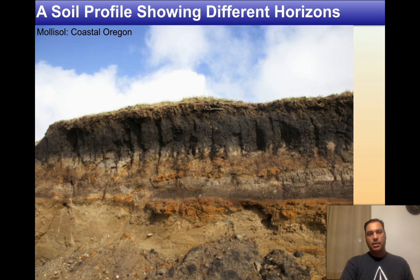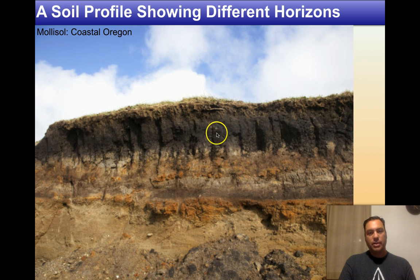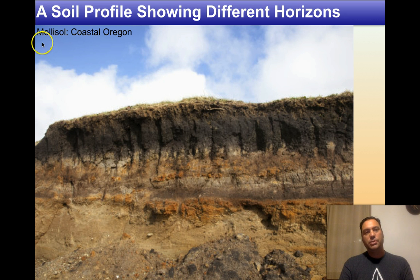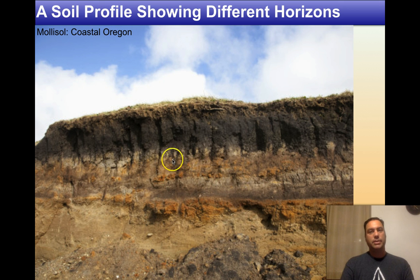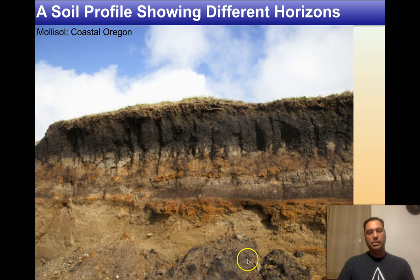Here we see an example of exactly what we were describing. There's a nice O horizon up on top and a very well-developed A horizon. This is a mollisol from coastal Oregon — a soil that forms in grassy areas. Right below the A horizon you can see a very clear zone of leaching, the E horizon. Some soil material has actually sloughed off the top of this cliff, so don't confuse that with bedrock material.